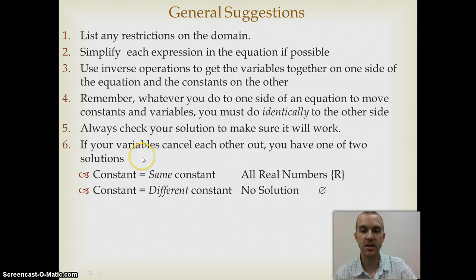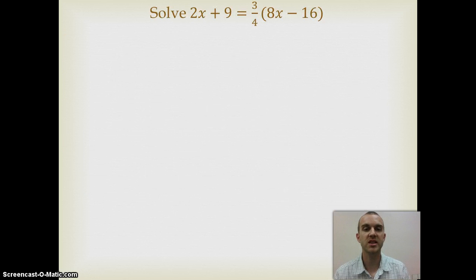And the last thing is if you ever see that you end up having a problem where the variables cancel each other, you're going to have one of two solutions. Either it's going to be all real numbers where my left side equals my right side, it's identical. Or my solution will be no solution. There's nothing I could plug in that would make that a true equation, and that's if my left and my right side are completely different.